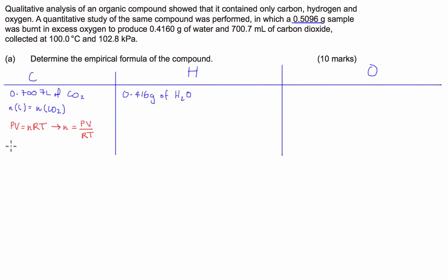The number of moles of CO2 is going to be equal to the pressure, 102.8 times the volume in litres, 0.7007 divided by the international gas constant, 8.315 times the temperature. And this is supposed to be in Kelvin, so this is going to be 373 Kelvin. So we're going to times it by 373.